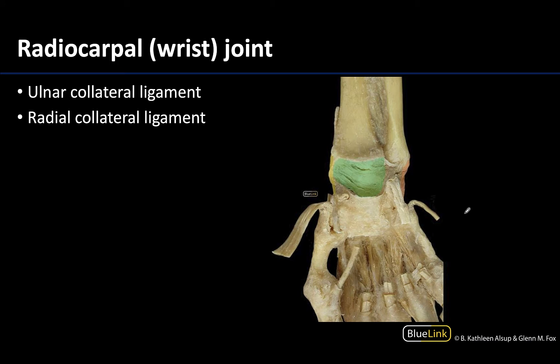Recall that the radiocarpal joint is a chondyloid type of joint. It is going to form by the articulation of the distal radius with the proximal row of carpal bones — three out of the four of that proximal row. The pisiform is going to lie in a different plane, anterior to the other carpal bones, so it is not directly related to the radiocarpal joint.